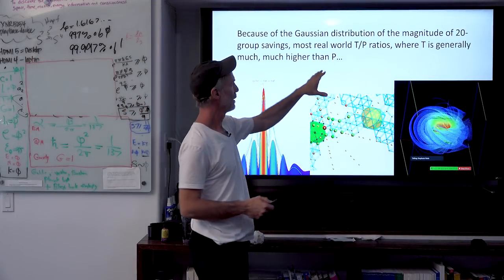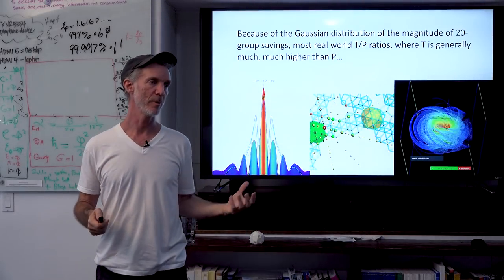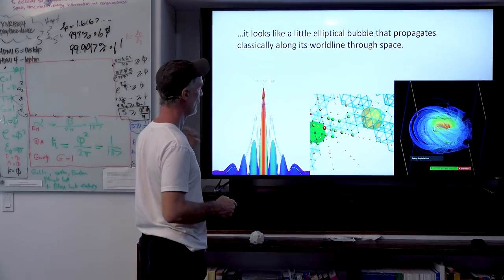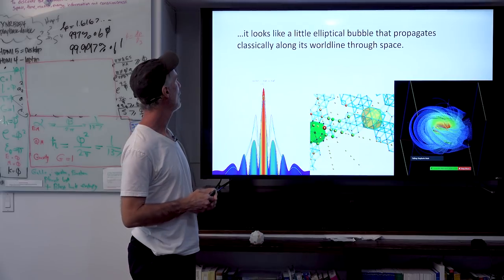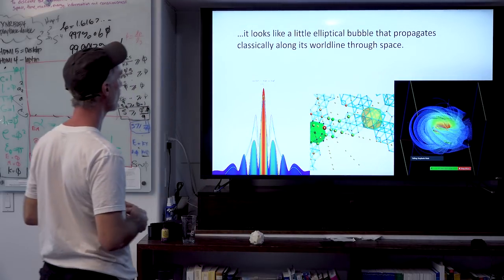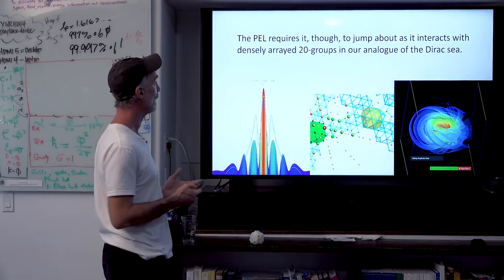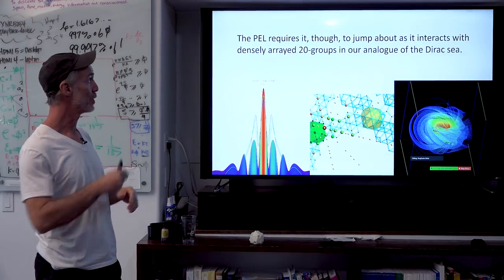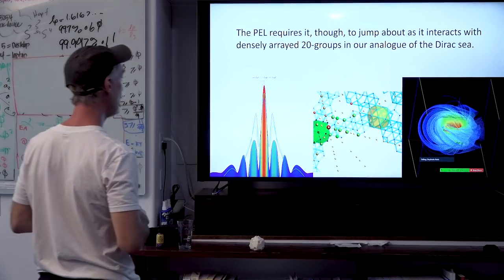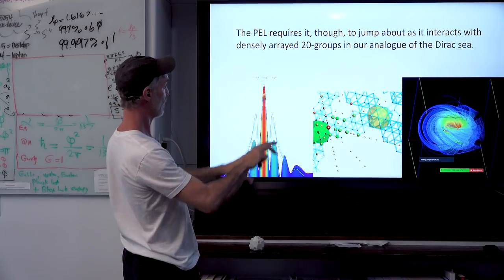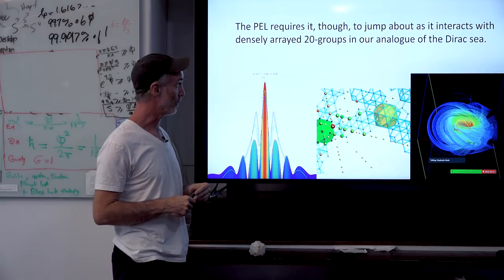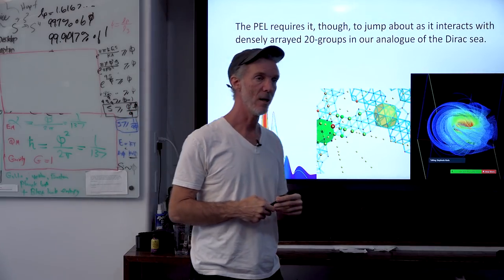It's pretty obvious that this Gaussian-like distribution propagates in a kind of semi-classical way where you really can't ask about its position or momentum. So the PEL requires it to jump about. So even though the bubble propagates semi-classically, the bubble itself also jumps about because it interacts with the densely arrayed 20 groups in our analog of the Dirac-C.